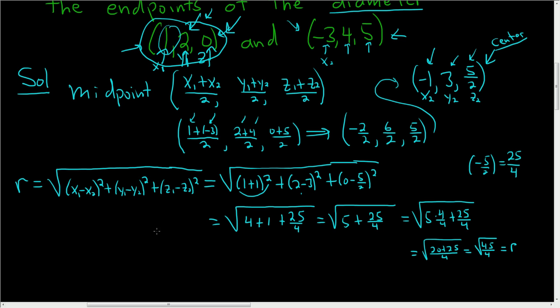To finish, we'll use our center and our radius and we'll write down the answer. So let me write down the center again. So the center was negative 1 comma 3 comma 5 halves, and the radius was the square root of 45 over 4.